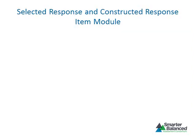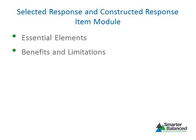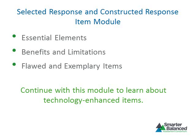This module has explored several issues specific to selected response and constructed response items, including the essential elements of each item type — the stem, stimuli, options, and scoring information — as well as the benefits and limitations of each item type, and characteristics of flawed versus exemplary items. The information should guide development of selected response and constructed response items specified by the task models for each assessment target. Participants who will not be writing technology-enhanced items may end the module now; those who will write technology-enhanced items should continue.